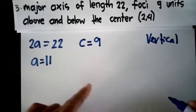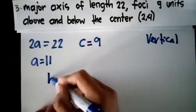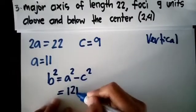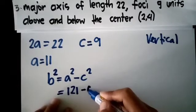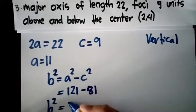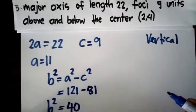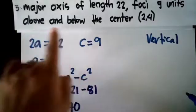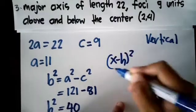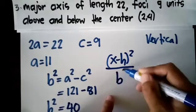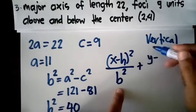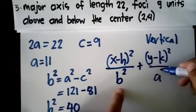Then how do you get b? B is needed. A and B, then we're done. So b² equals a² minus c². Your a² is 121 minus 81. 121 minus 81, b² is 40. So we know it's vertical based on this condition above and below. So (x - h)² over b² - b squared here, meanwhile a squared here, because the y part has a bigger denominator since it's vertical. (y - k)² over a² equals 1.